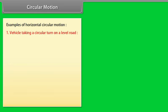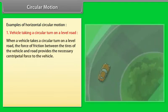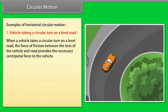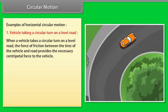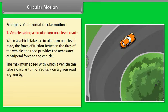Example 1 — Vehicle taking a circular turn on a level road: When a vehicle takes a circular turn on a level road, the force of friction between the tyres and road provides the necessary centripetal force. The maximum speed with which a vehicle can take a circular turn of radius R is given by V = √(μRg).